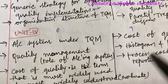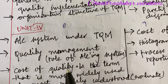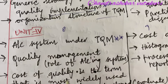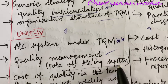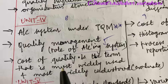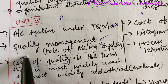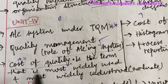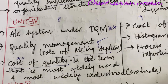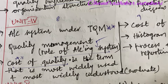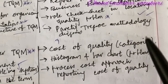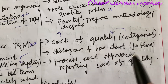Moving to the eighth and ninth question: accounting system under TQM is set as the topmost question. Quality management — the short question. The role asked in the accounting system may be the long question. The cost of quality is set to be the topmost question related to cost of quality. They will be asking any part of the question, that may be in the form of 8A, 8B as well as a short question.